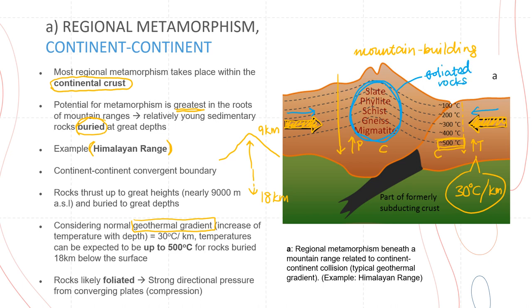We'll talk more about foliated rocks when we get to the classification of rocks section later in this lecture. For now, what you need to know is that because these rocks are being pushed and squished together, the rocks that are formed would very likely be foliated.